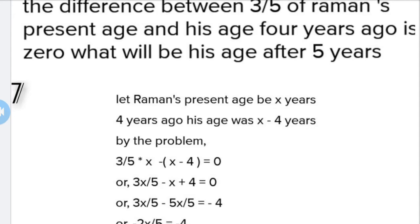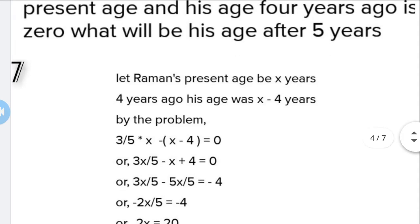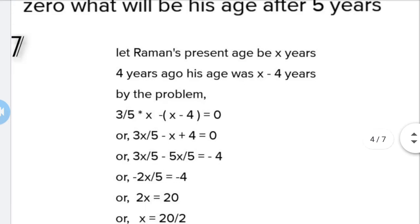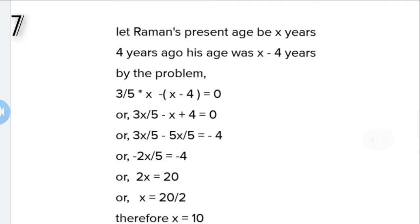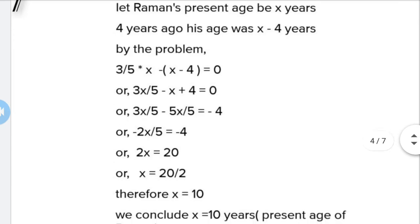First, we will write what we have to write. Let present age be x. If we talk about four years ago, we will use x minus 4. By the problem, we solve: 3/5 times x minus (x minus 4) equals 0. If we solve this equation, we will get x value is 10.